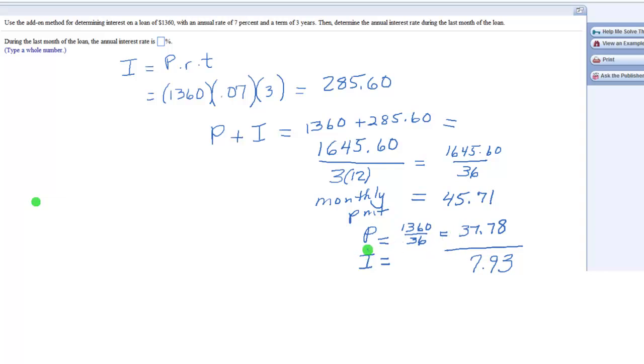Now, we want to know what the percent, what this interest rate is, what percent of this principal during the last month, because this is the only principal that's left out of the entire loan that last month. So we're going to set up our percent problem, X over 100 equals, and you're going to put your interest over your principal.